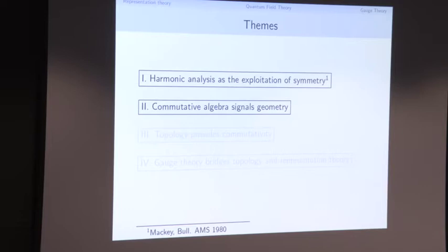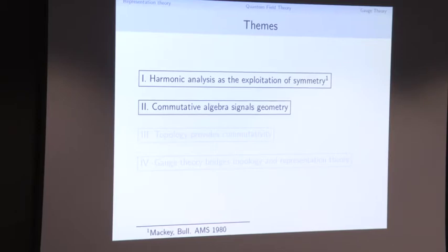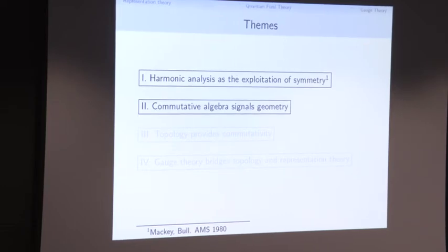The second theme is commutative algebra equals geometry, a theme associated with Galois and Grothendieck. The idea is that whenever you see a commutative ring, you should think there's a space behind it. Whenever we see a commutative ring, we should try to find a geometric realization — the spectrum of the ring — and realize that the ring consists of regular functions on that space.